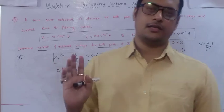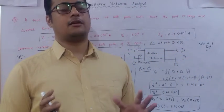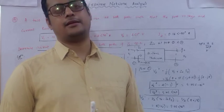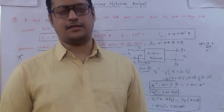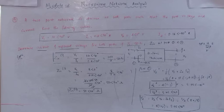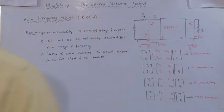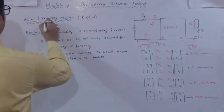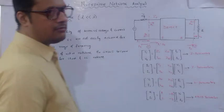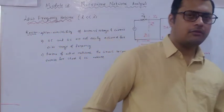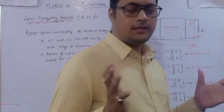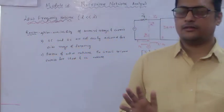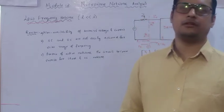Next, we discuss why we use scattering parameters for microwave networks instead of Z and Y parameters. Till now we discussed low-frequency networks. Microwave frequencies range from 3 GHz to 300 GHz. In that frequency range, the normal Z-parameter and Y-parameter are very difficult to determine.